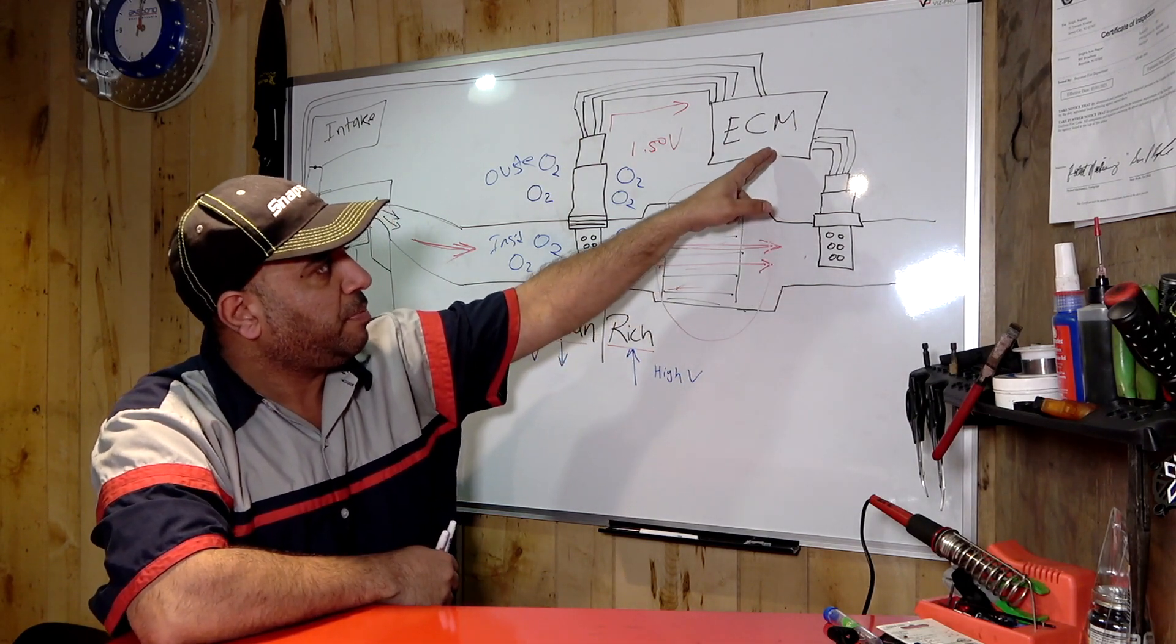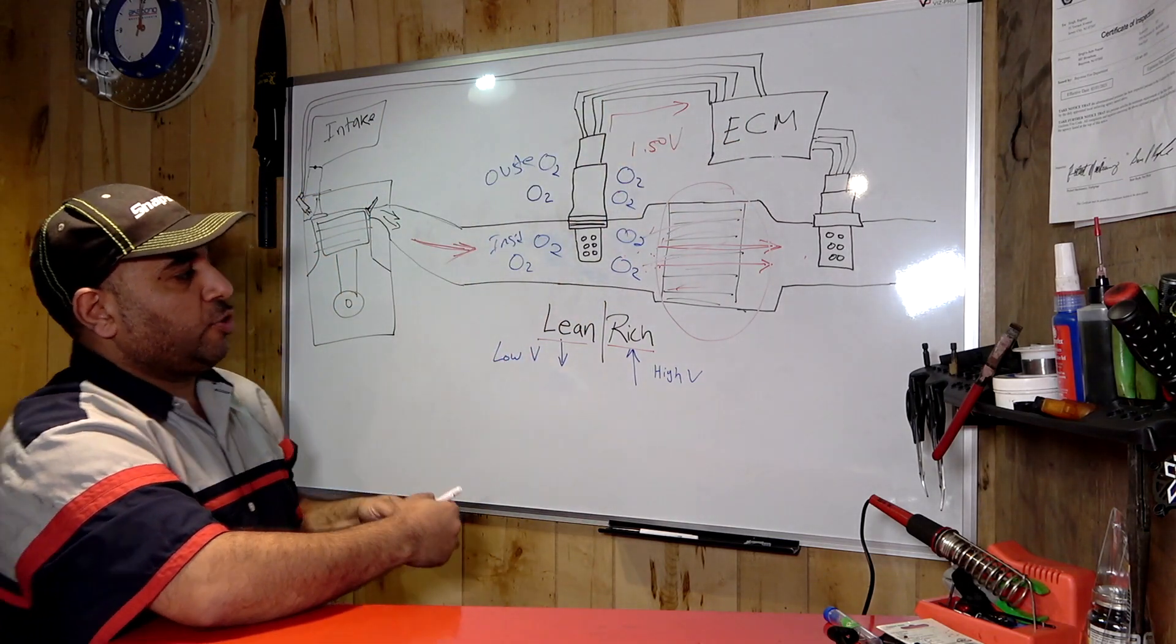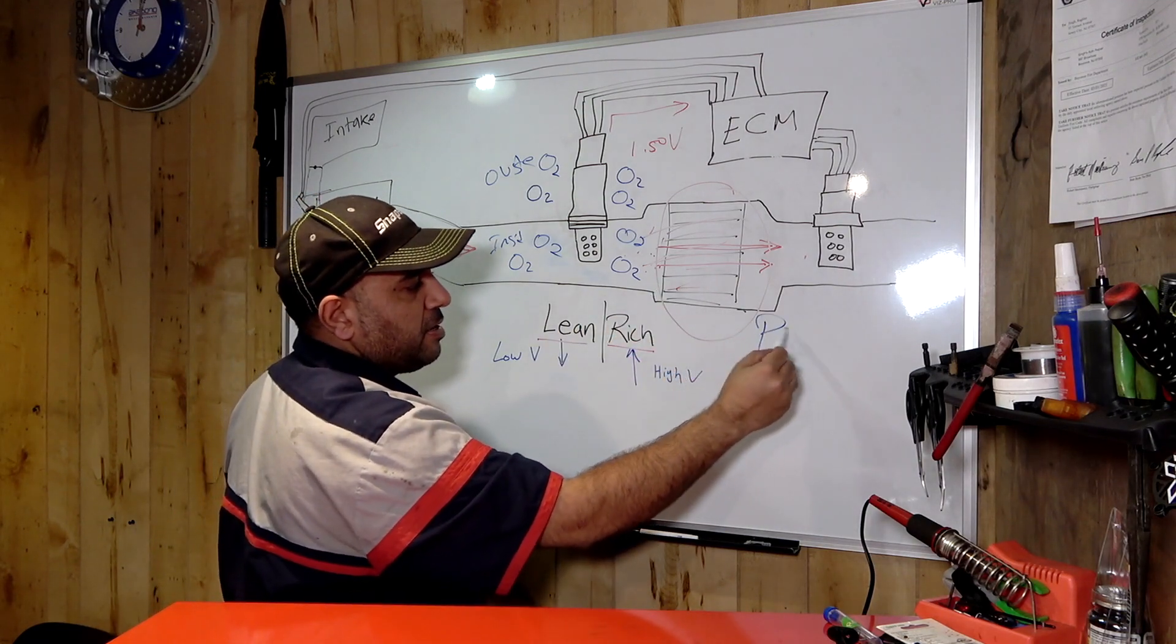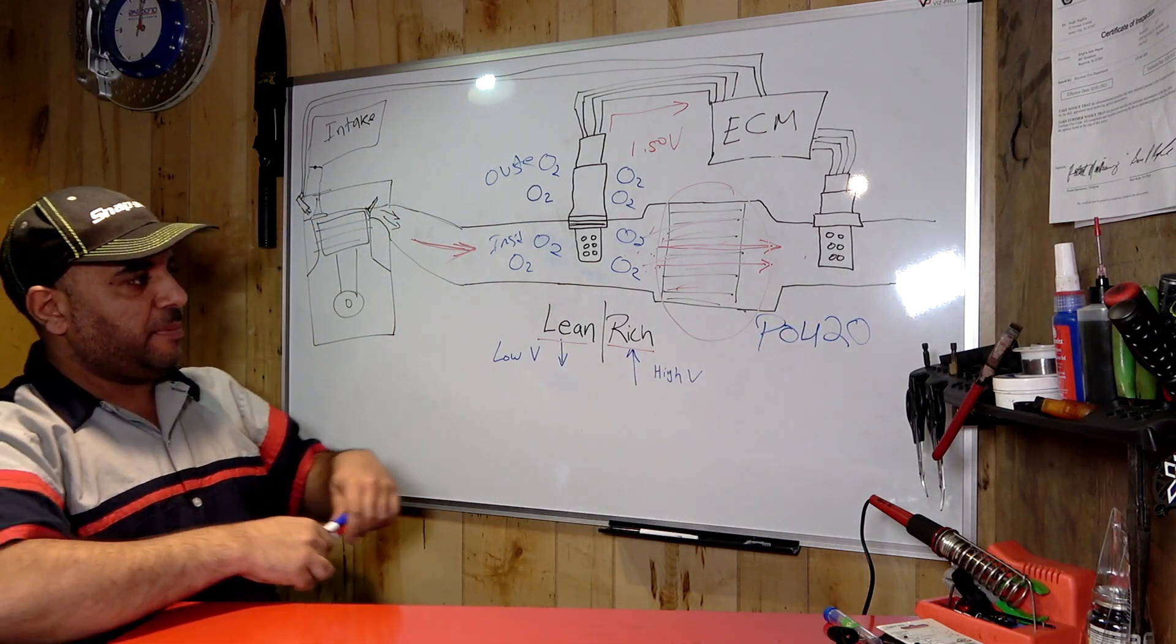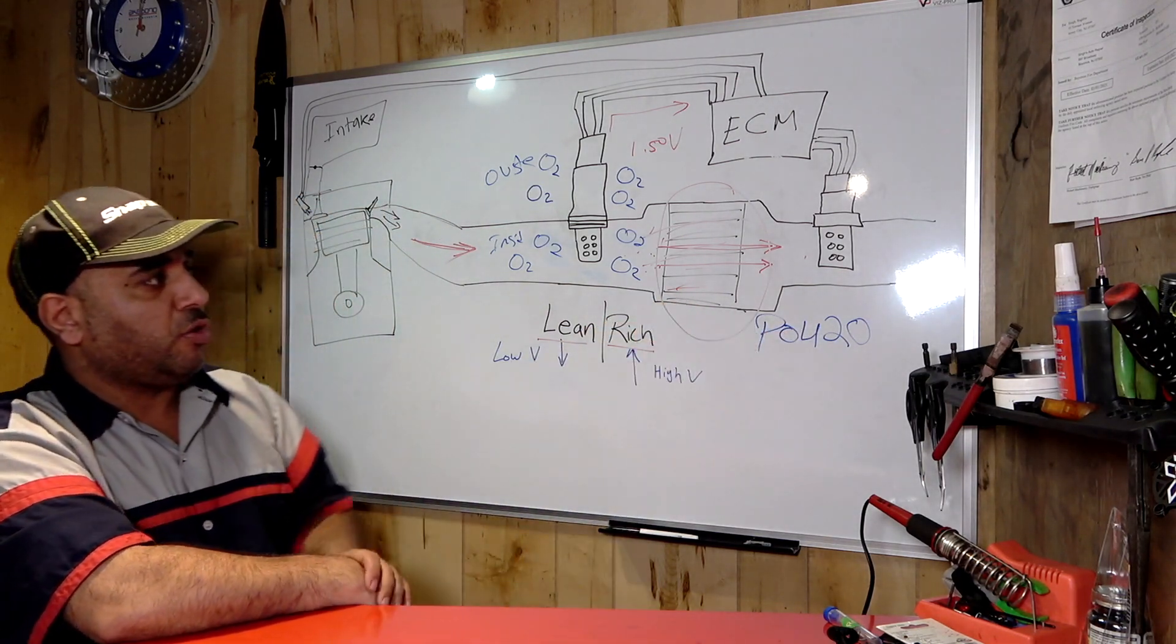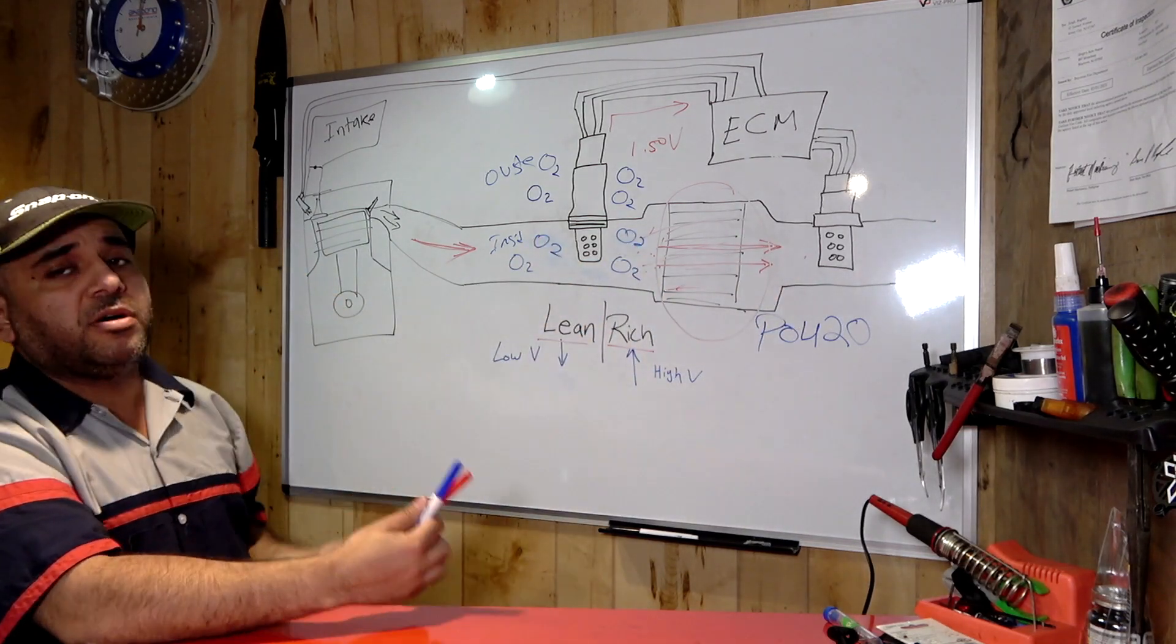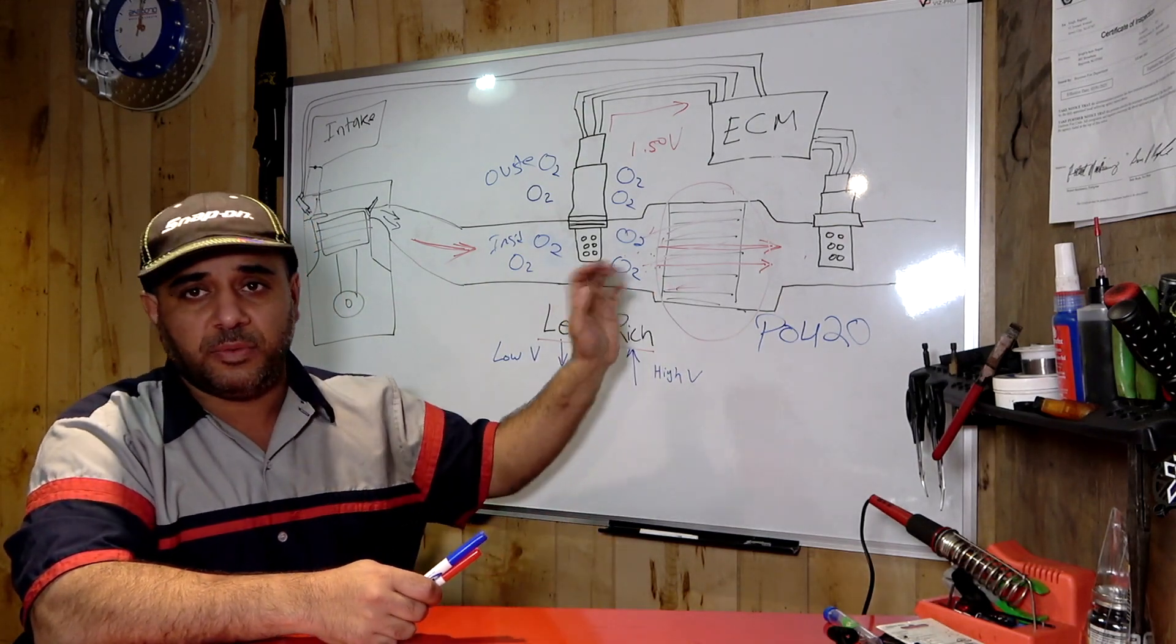It picks up the emissions and creates a signal to the computer, and the computer determines and will throw, let's say your catalytic converter is bad, it's not doing its job: P0420, that'd be the code for bad catalytic converter. These sensors do tend to get dirty over time. I have done videos on how to clean oxygen sensor.